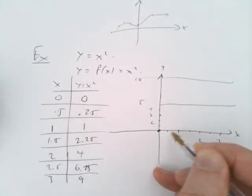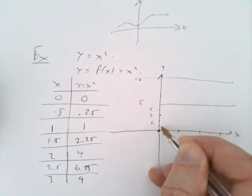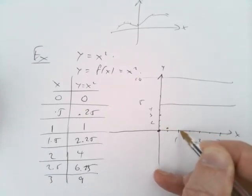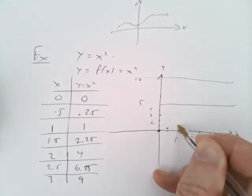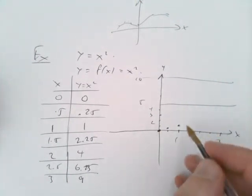Then we've got 0.5, 0.25, which is very small, very close to the axis. Then 1,1. Note that the y values and the x values are on different scales. They don't have to be the same size.